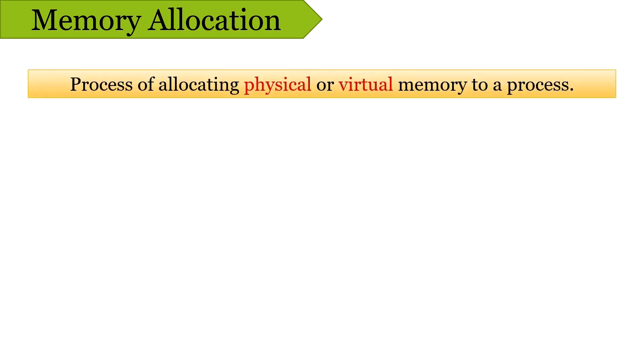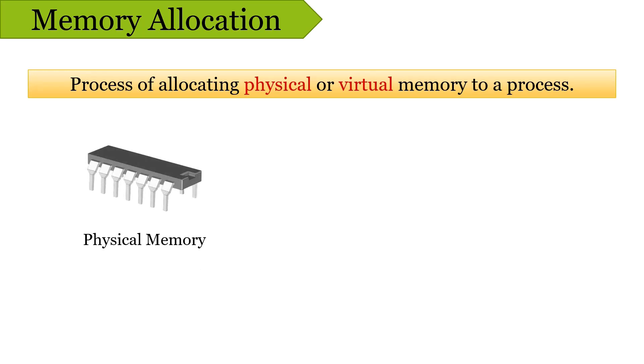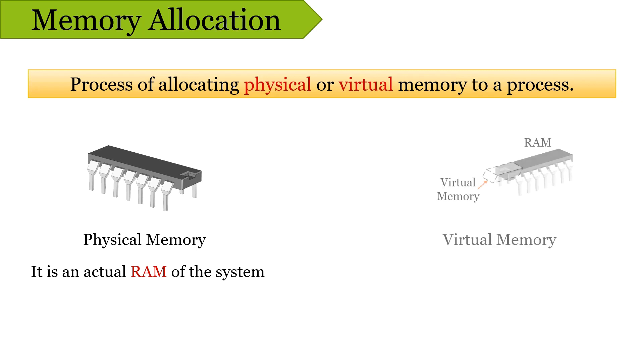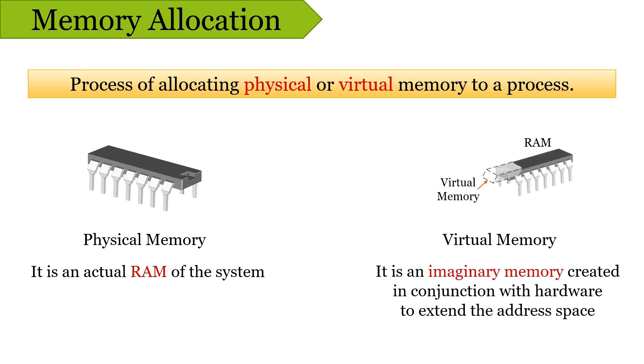Memory allocation is a method of assigning memory to a process. A process has elements such as variables and instructions that need to be stored in main memory in order to get the process executed. So memory allocation is a method to assign physical or virtual memory to a process. Physical memory is the RAM of your system, and virtual memory is an imaginary memory created in conjunction with the hardware of your system in order to extend the physical memory.